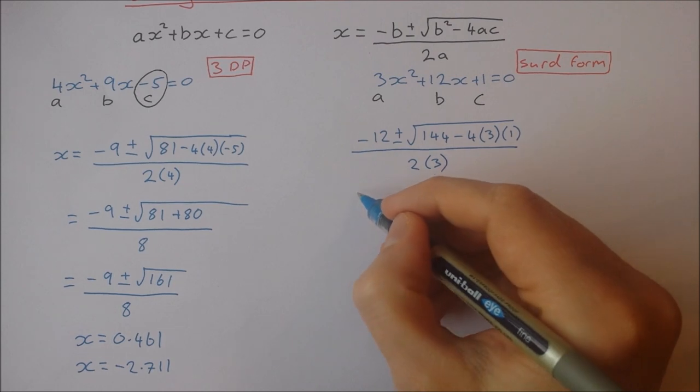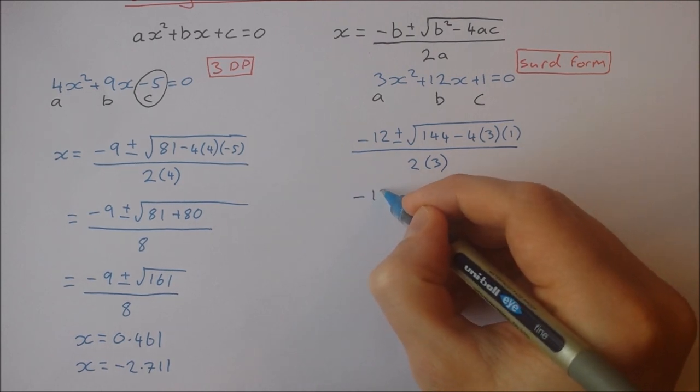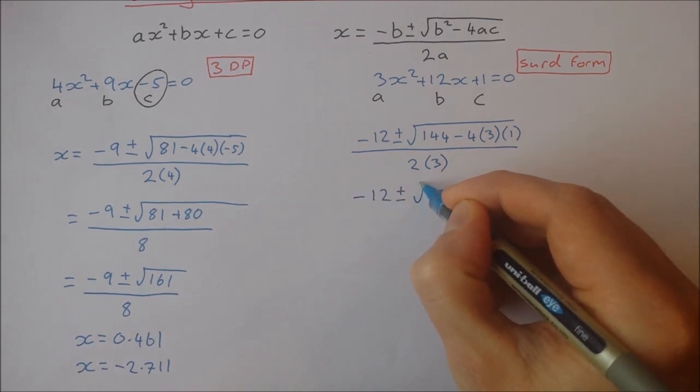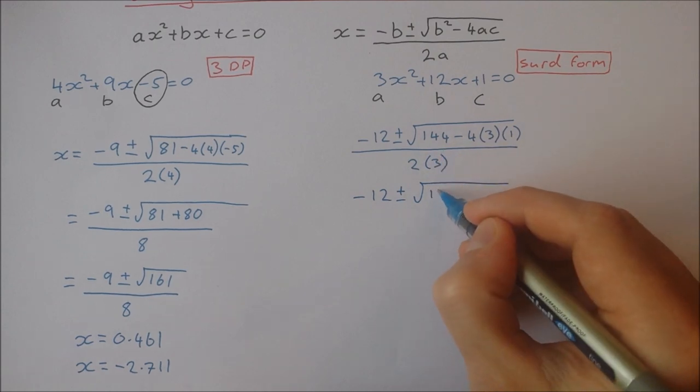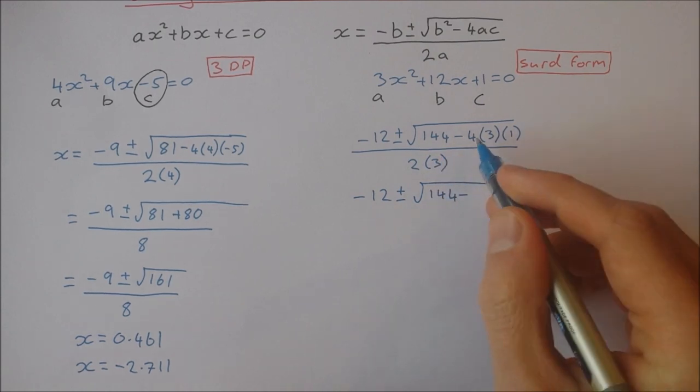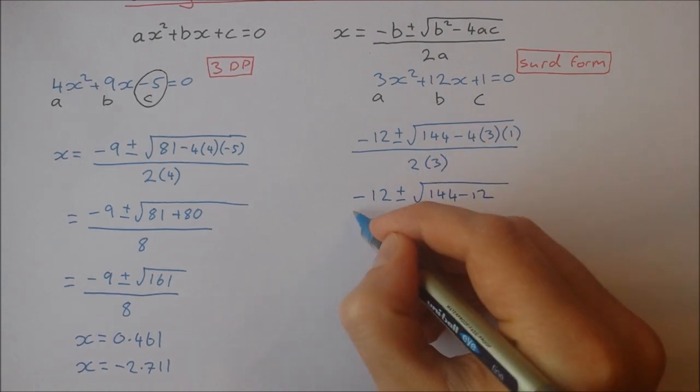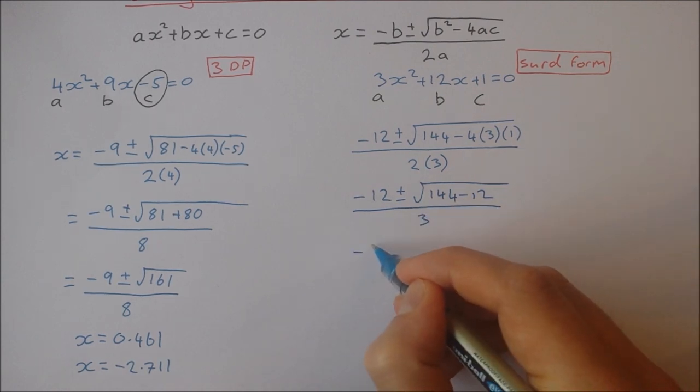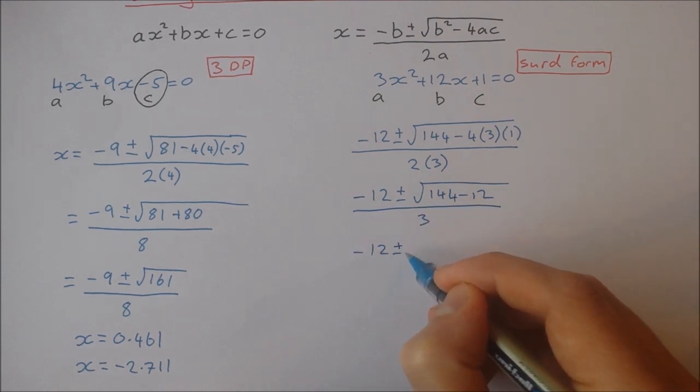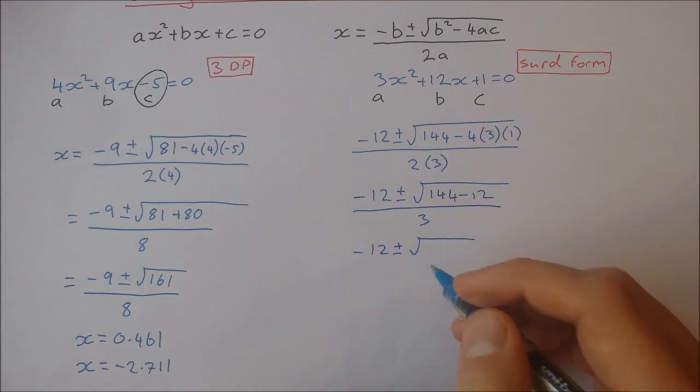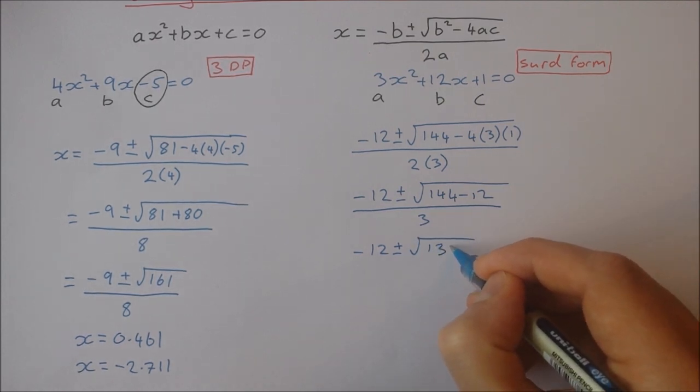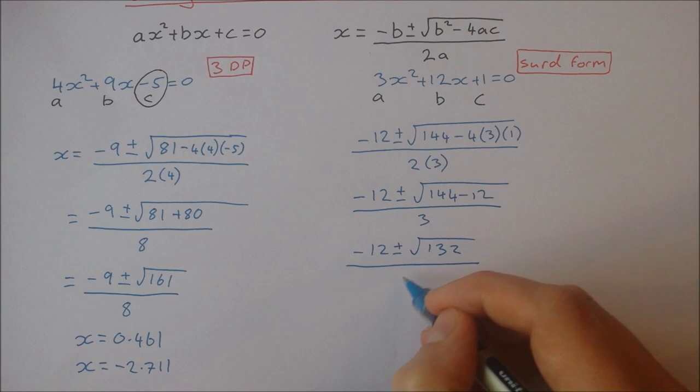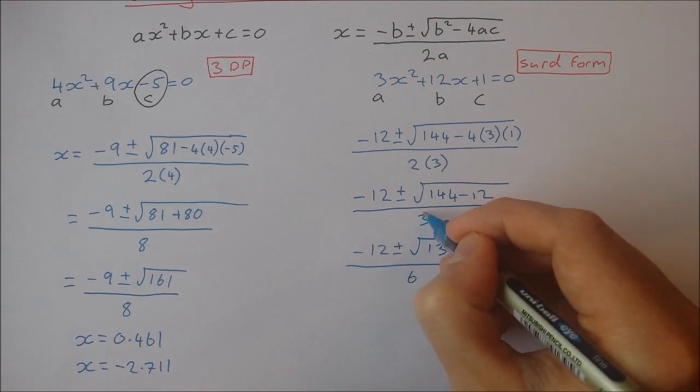Okay, so let's continue working out here. Minus 12 plus and minus the square root of 144 minus 12. Sorry, that's minus 12 plus and minus the square root of 132 over, sorry, that should be 6.